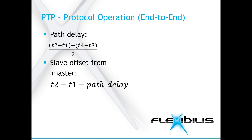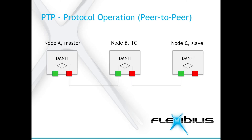Here you can see the formulas used to calculate the path delay and slave offset from the master. Peer-to-peer clocks calculate the delays for the links in the network, unlike in end-to-end mode where the delay is calculated for the whole path between the master and the slave. So in this picture, the delay would be calculated separately between nodes A and B and between nodes B and C.